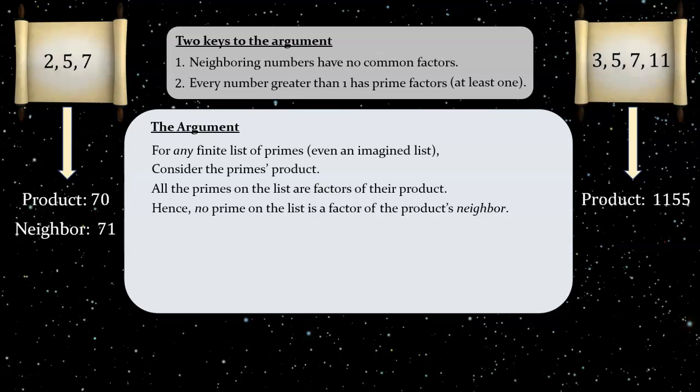And the same thing can be seen in our illustration at right, where the product was 1,155. The primes on that example list, 3, 5, 7, and 11, are all factors of 1,155. But for that very reason, none of them can be factors of the product's neighbor, 1,156. And of course, there's nothing special about either of our illustrative examples. This would work for any finite list of primes, thanks to that first key to our argument.